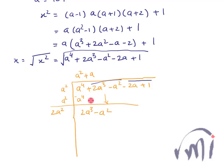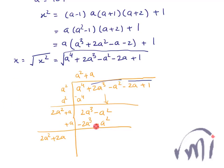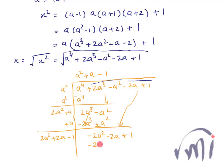A term multiplied by 2a² gives 2a³, so we write +a in the quotient and divisor, giving 2a² + a. Multiplying: 2a³ + a². Subtracting leaves −2a² − 2a + 1. The divisor becomes 2a² + 2a, and multiplying by −1 gives −2a² − 2a + 1, which exactly cancels. So the square root is a² + a − 1.